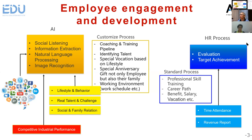Then we propose to use AI in this function. We will collect the data for lifestyle and behavior, real talent and challenge, social and family relations. And also competitive industry performance will be collected, along with data from social media such as Facebook, Snapseed, and any sources from the internet.